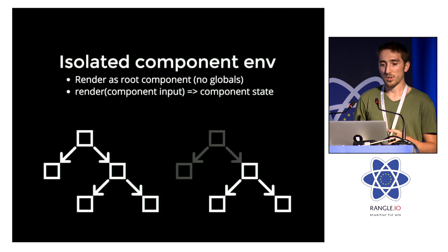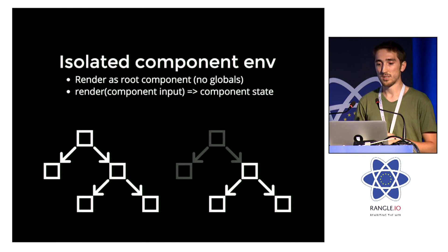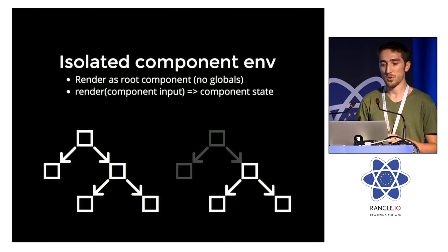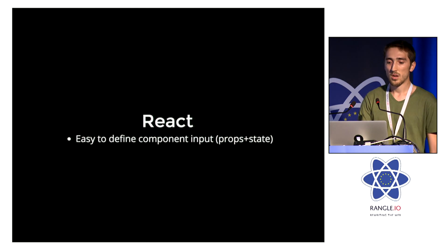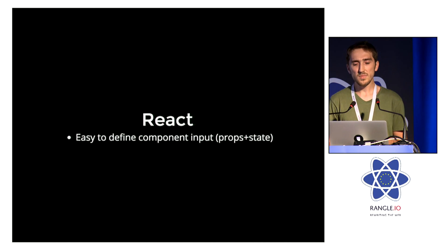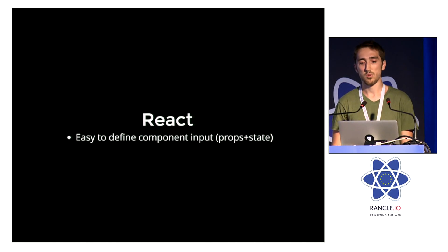For that, you need to be able to have a clear function of component input that turns into deterministic component states. This will allow you to render any subtree from your entire app hierarchy. And it turns out React does just about that — it turns your components into a function of props and state.